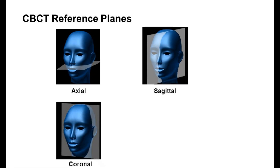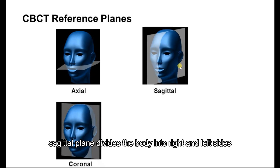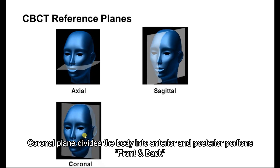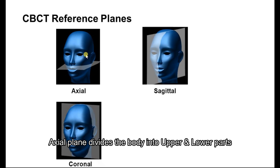As-salamu alaykum. The CBCT planes. We have the axial plane, sagittal plane, and coronal plane. The sagittal plane divides the body into right and left. The coronal plane divides the body front and back. And the axial plane divides the body into top and bottom.